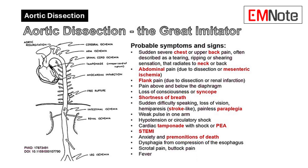Red flags for atypical presentations include sudden syncope, stroke-like symptoms such as weakness, numbness, or difficulty speaking, and abdominal pain that mimics pancreatitis or a ruptured abdominal aortic aneurysm if the dissection affects the abdominal aorta. Atypical presentations are more common in older adults — whose other conditions may mask typical symptoms — and in women, who often experience different pain patterns. Extra vigilance is needed in these populations.